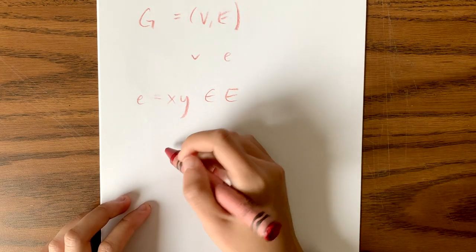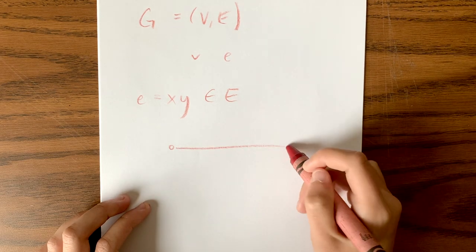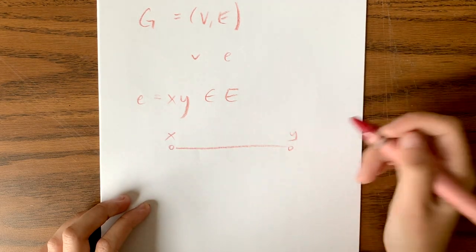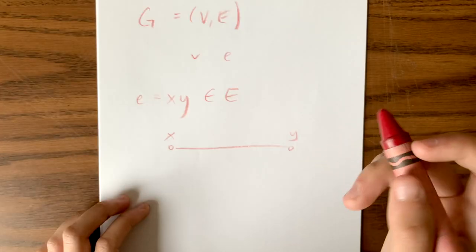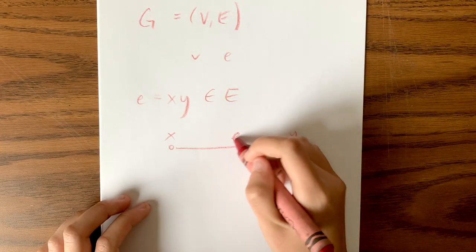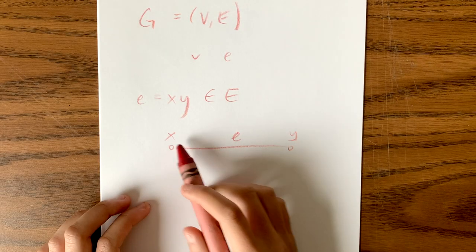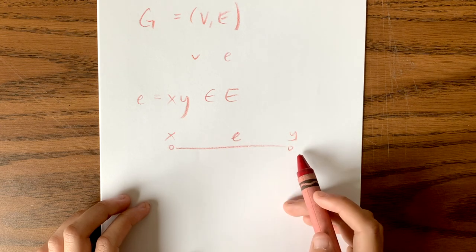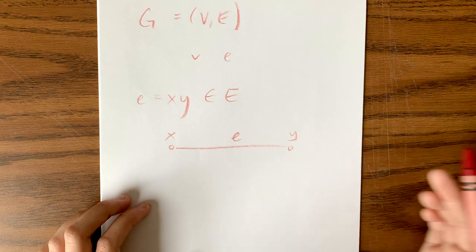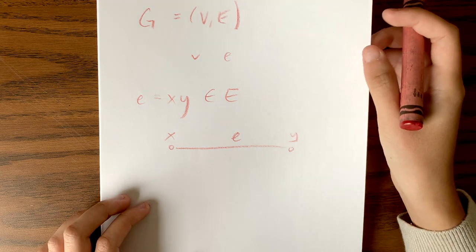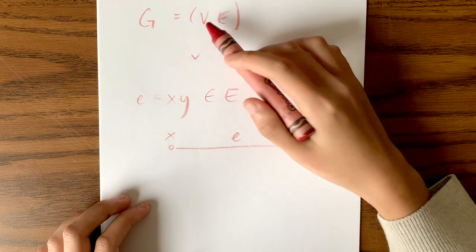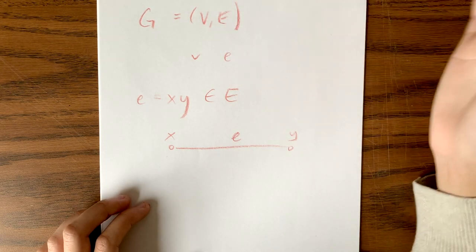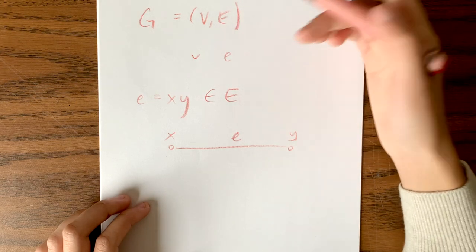So this might look like two vertices x and y which exist in our vertex set, and we have the edge E incident to both x and y. We can say that x and y are neighbors and also adjacent to each other. In a graph, we can have a whole bunch of vertices in our vertex set — we don't just need two — and we can also have a whole bunch of edges in our edge set.